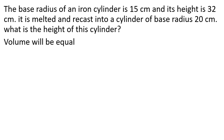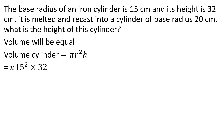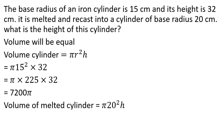We need to find the height of the new cylinder. When we melt the same cylinder, the volume remains the same. The volume of the original cylinder is πr²h, where radius is 15 and height is 32. That gives us π × 225 × 32.